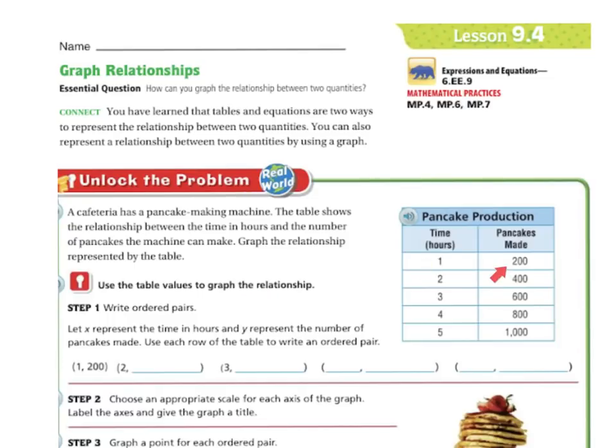So in one hour, we make 200 pancakes. In two hours, 400 pancakes. Three hours, 600. Four hours, 800. And in five hours, we make 1,000 pancakes.